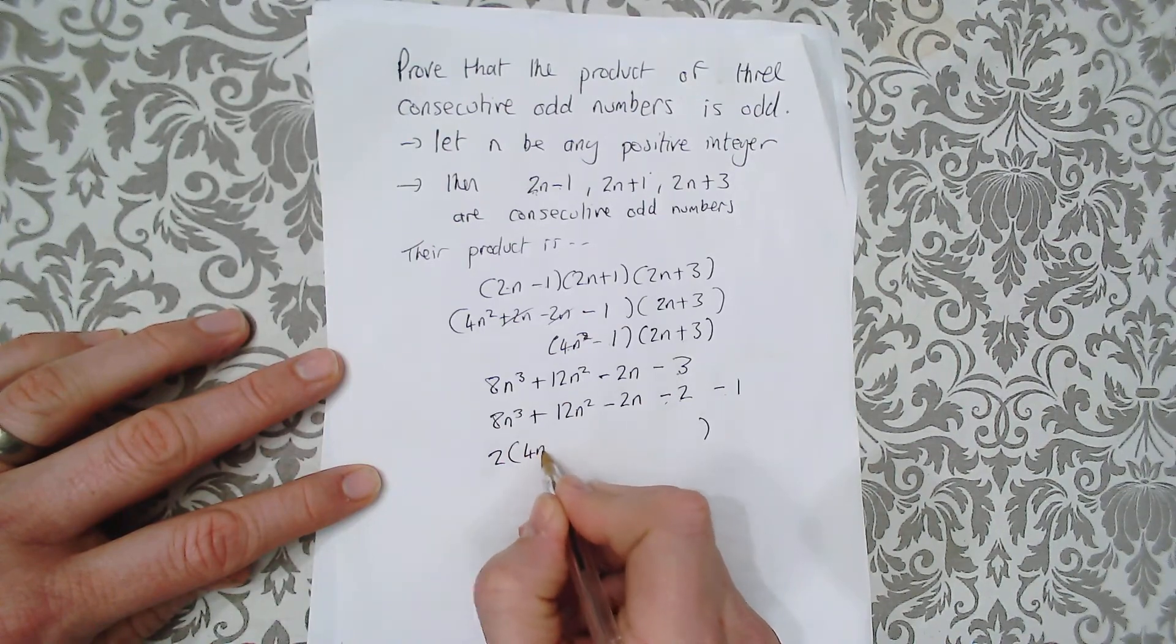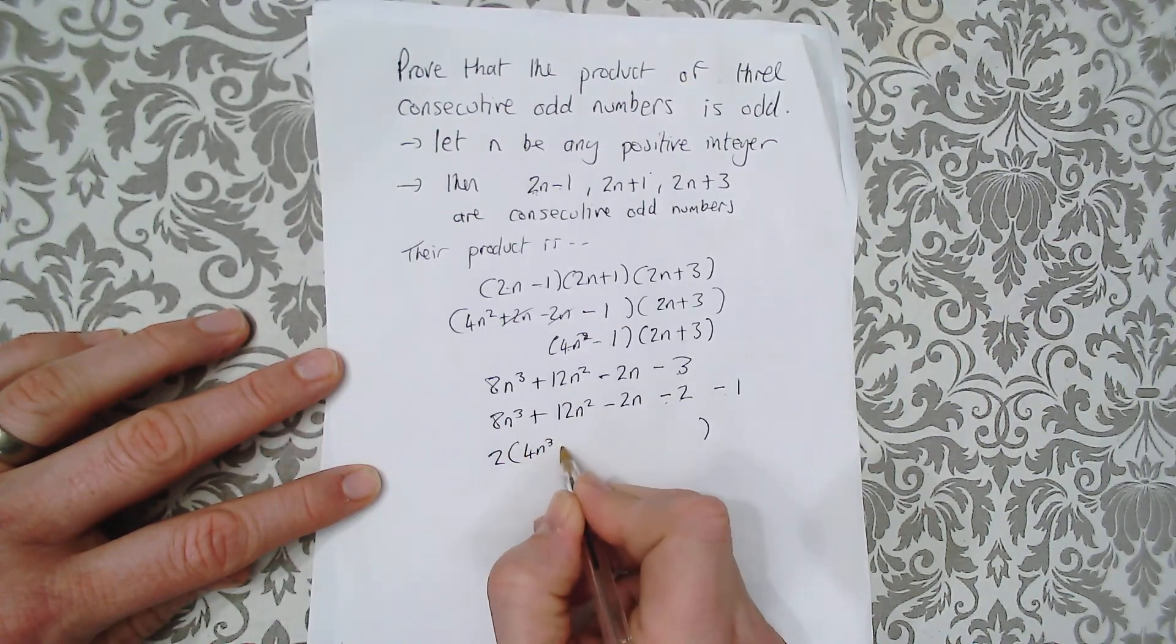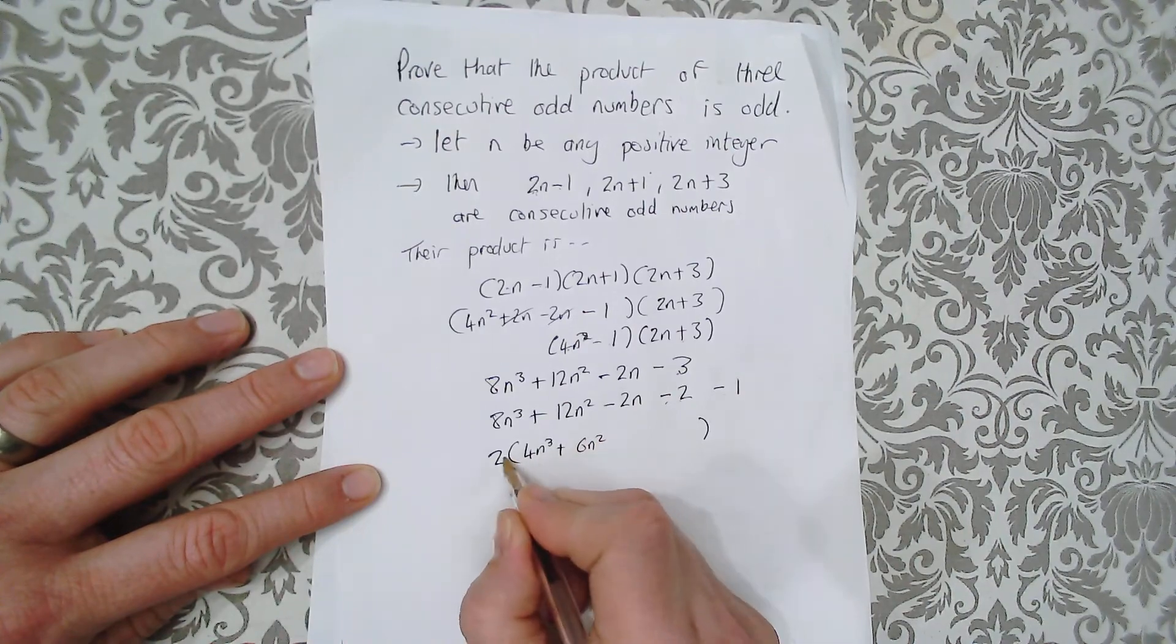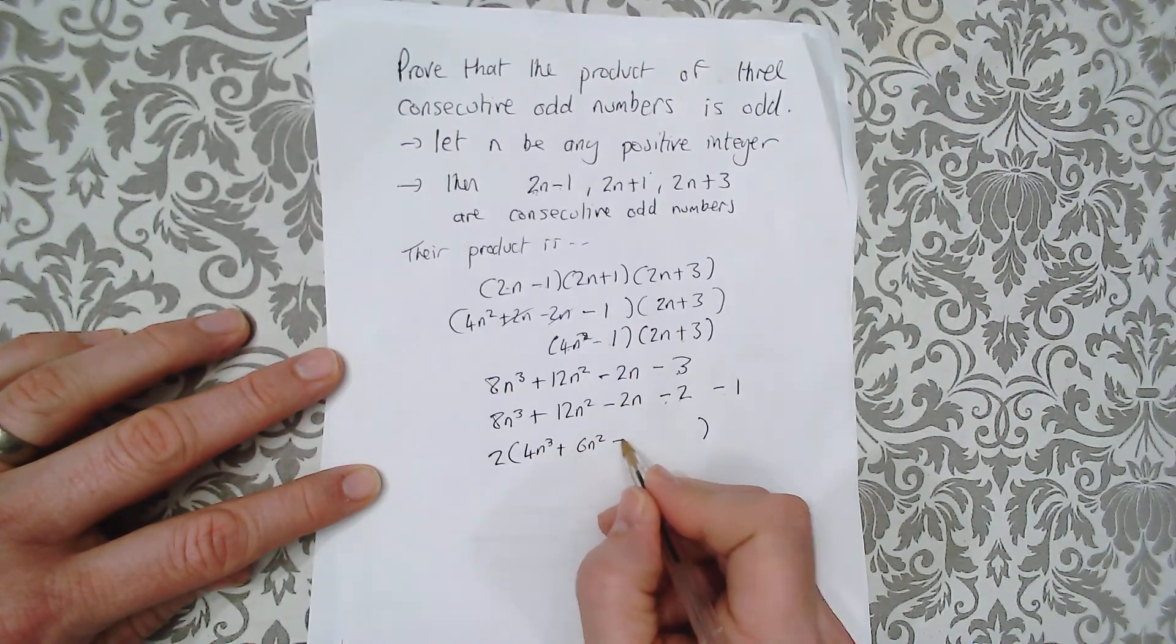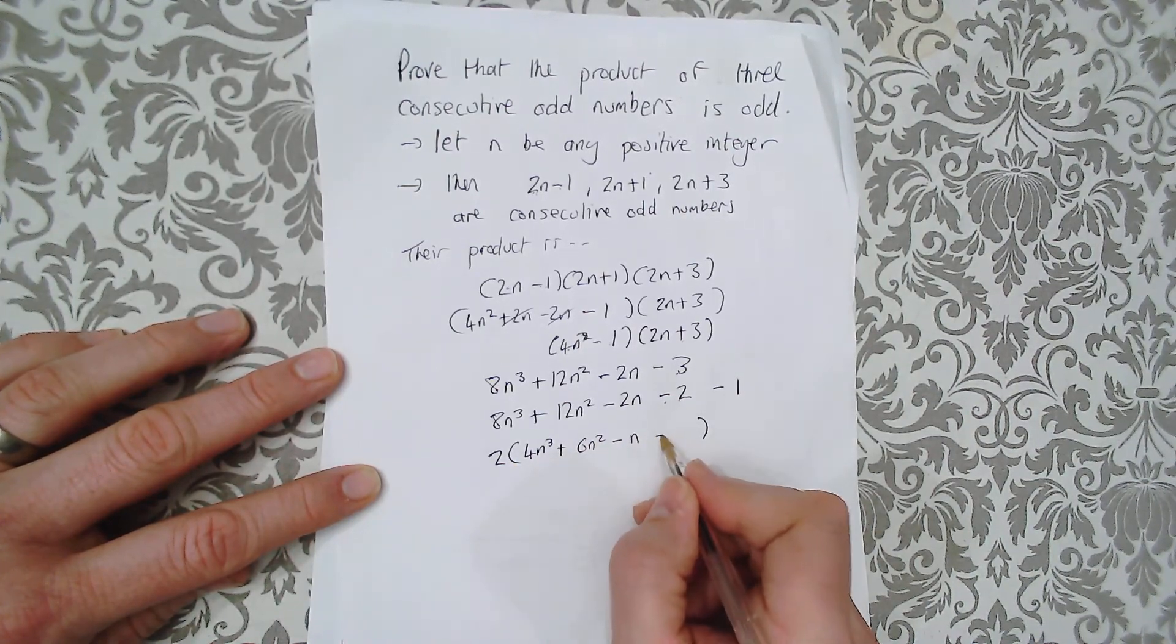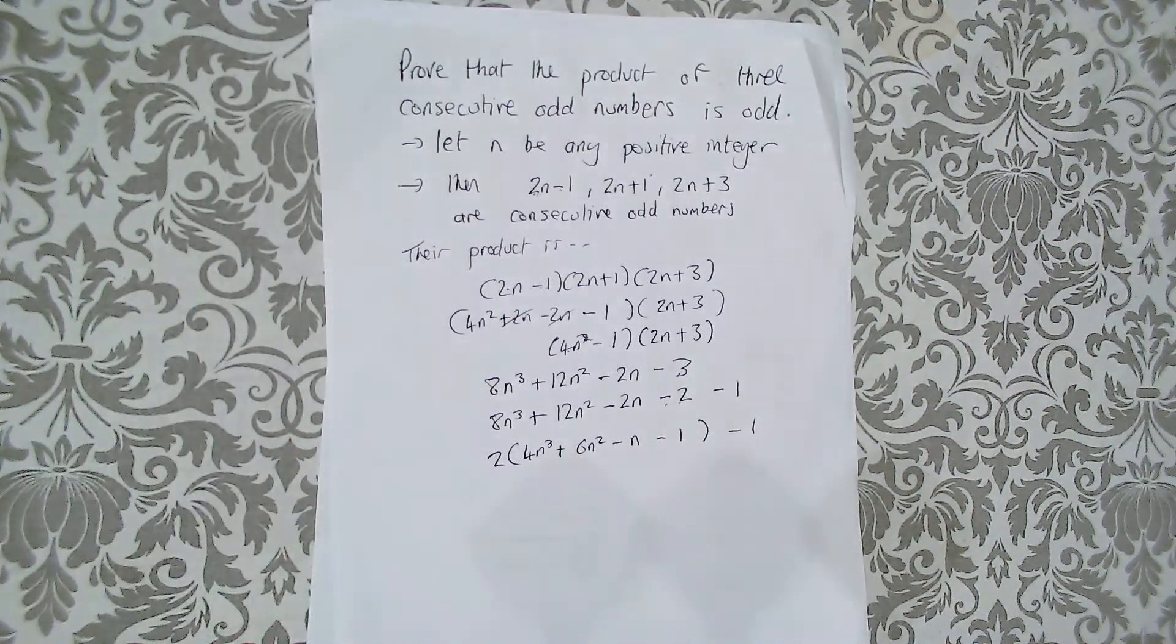So 2 that becomes 4n cubed. I've got 2 lots of 6n squared. I've got 2 lots of negative n. I've got 2 lots of negative 1. And I've got negative 1 at the end.